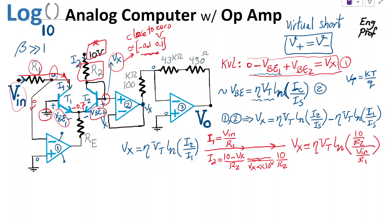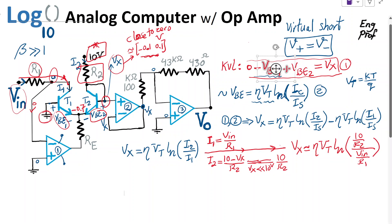As a result, I'm going to substitute and write that Vx is roughly eta Vt ln, I2 is 10 over R2, and I1 is Vin over R1. In summary, I got Vx is approximately eta Vt ln of R1 over R2 times 10 over Vin.